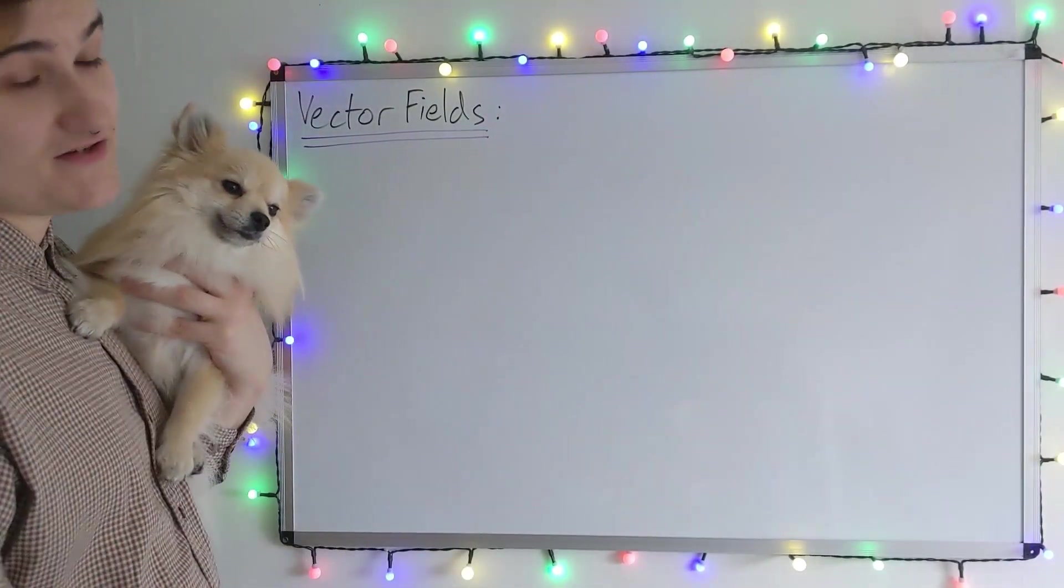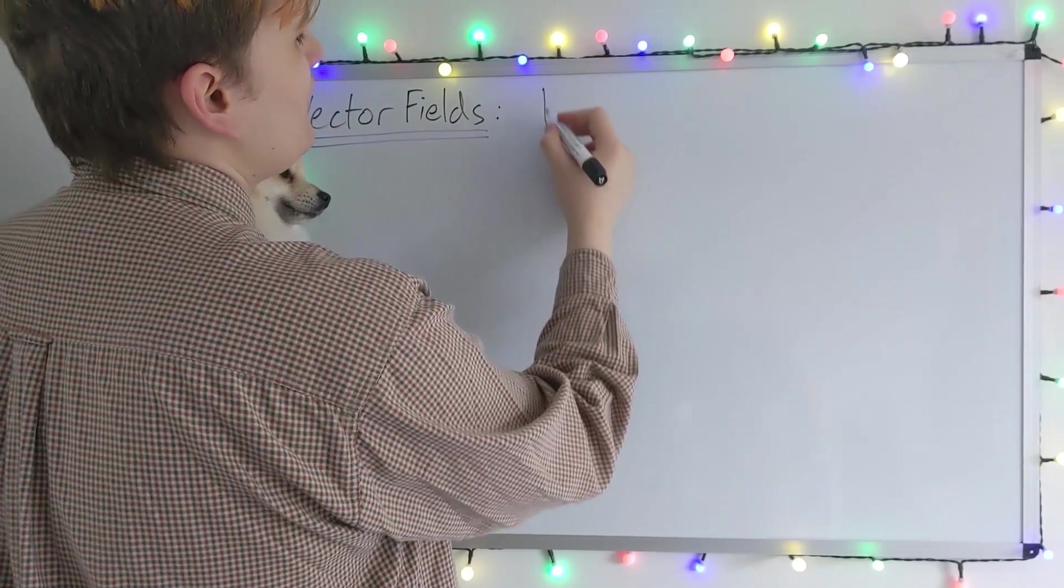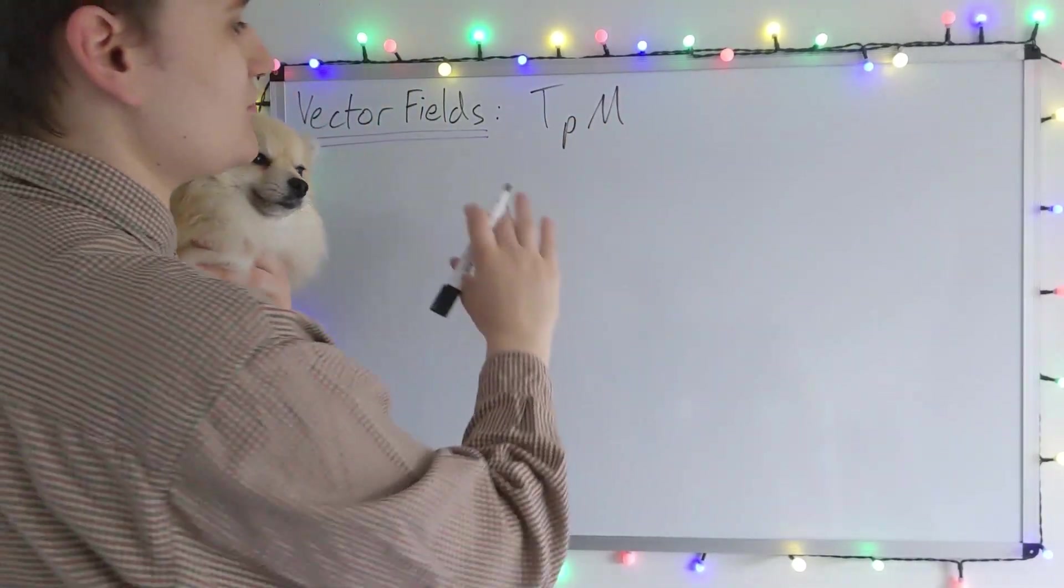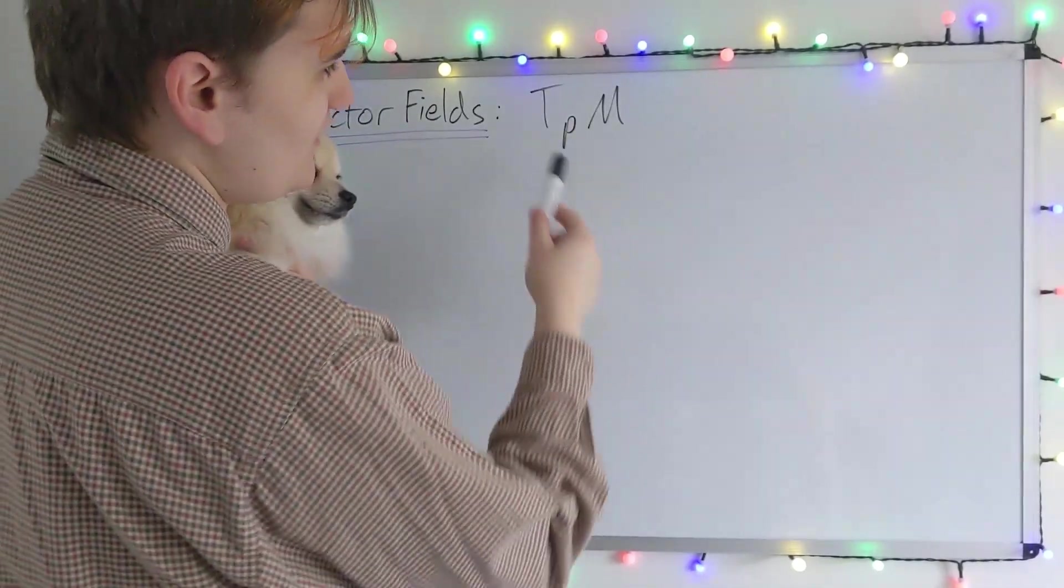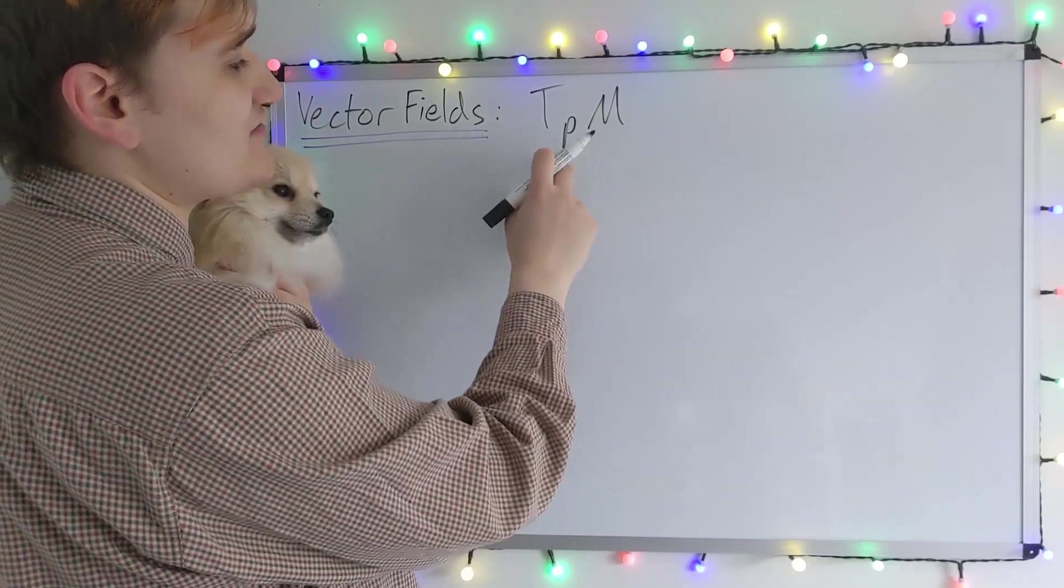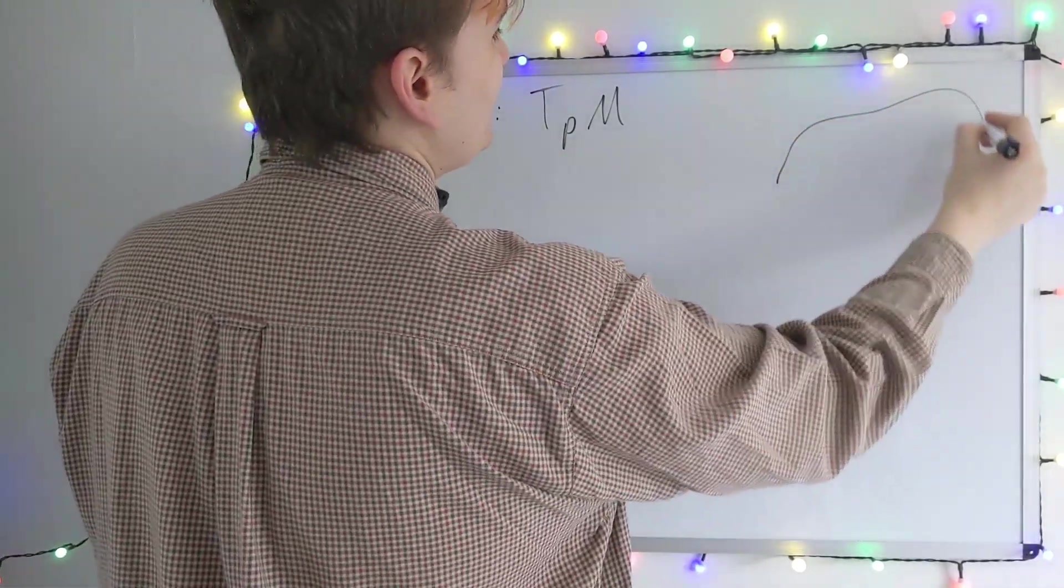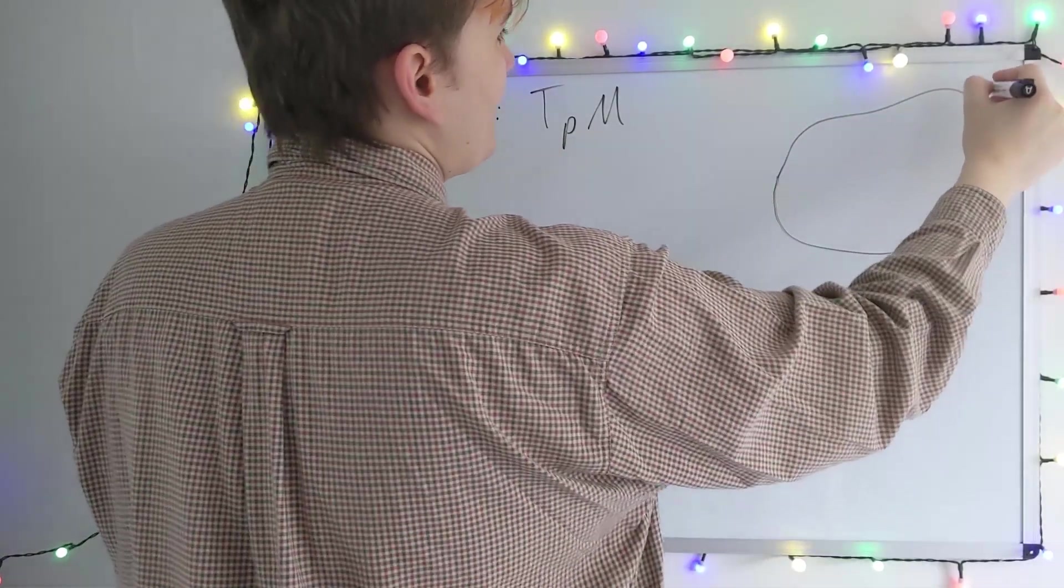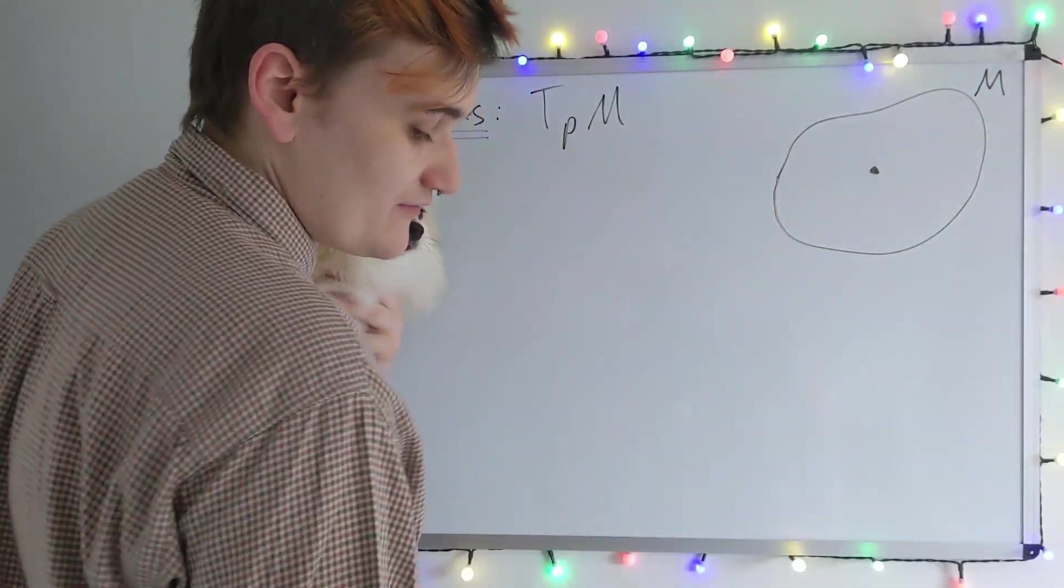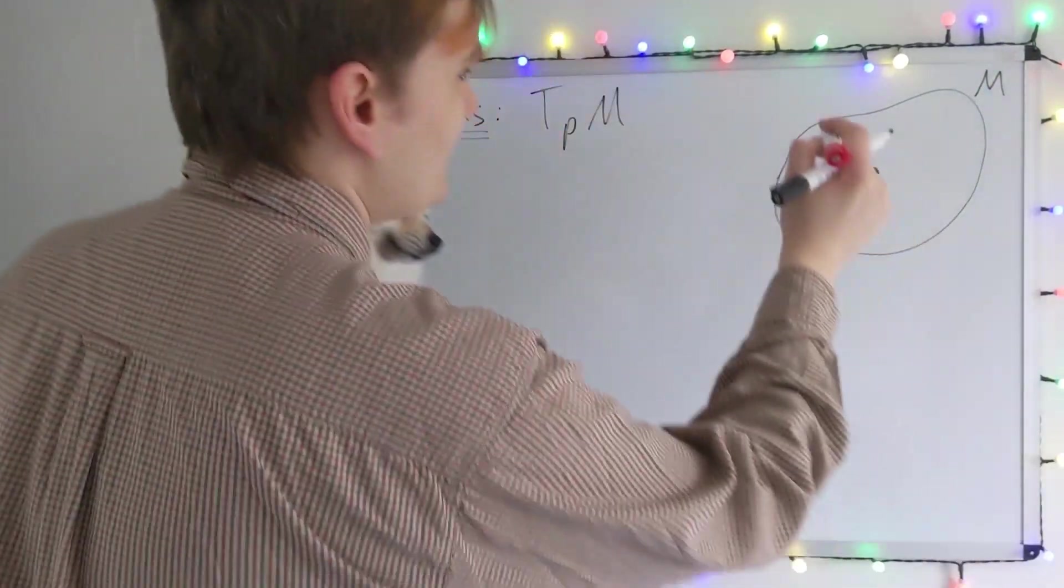I'll just remind you that last time we showed that at every point in the manifold we have this vector space called the tangent space, which is given the name TP of M. So this is the tangent space at point P of our manifold. If this is our manifold, at every point in the manifold there exists a vector space, a tangent space.